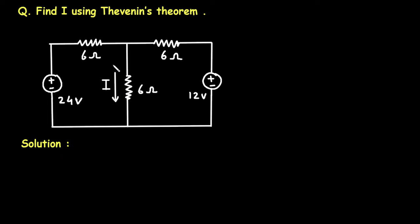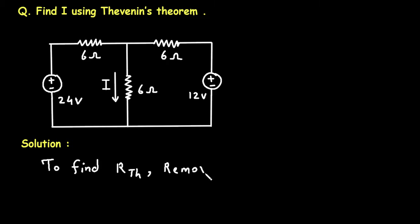To find the solution by using Thevenin's theorem, first of all we will find RTH. To find RTH, that is Thevenin resistance, remove RL and turn off all independent sources.